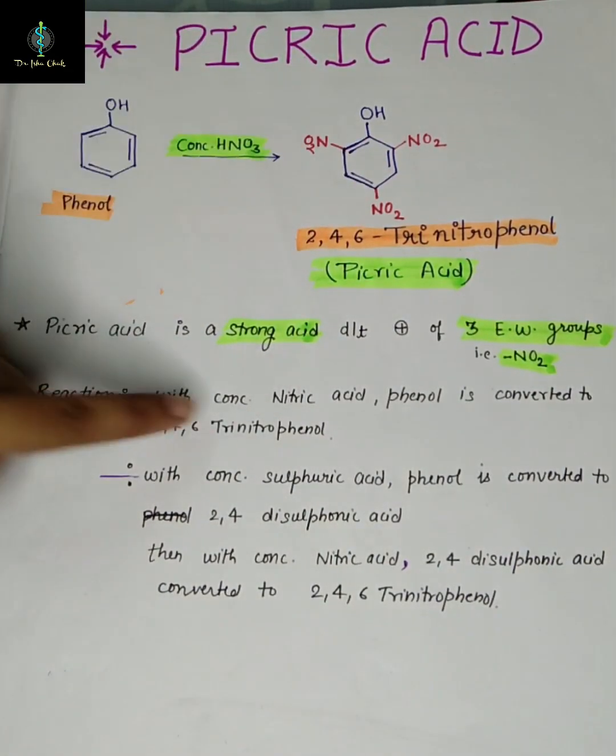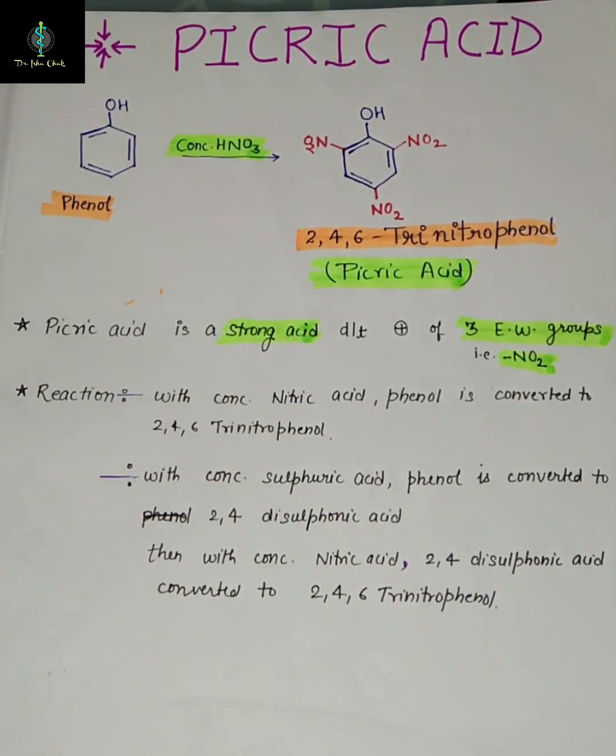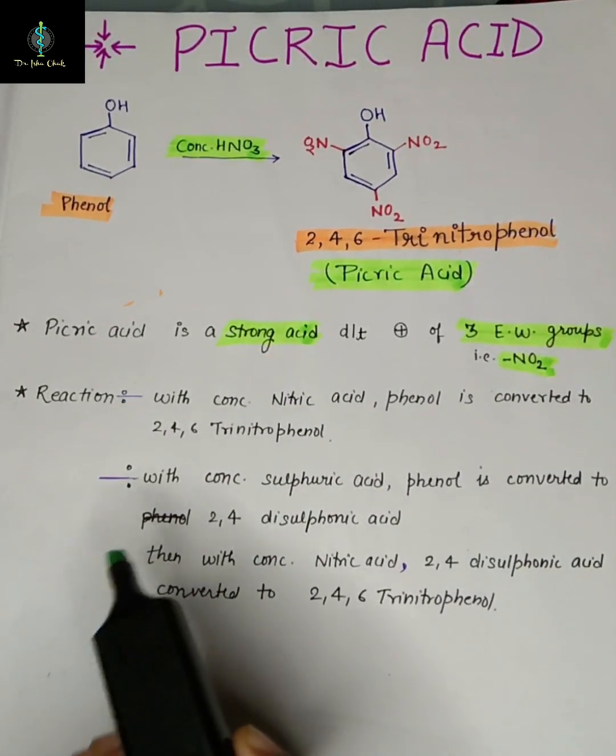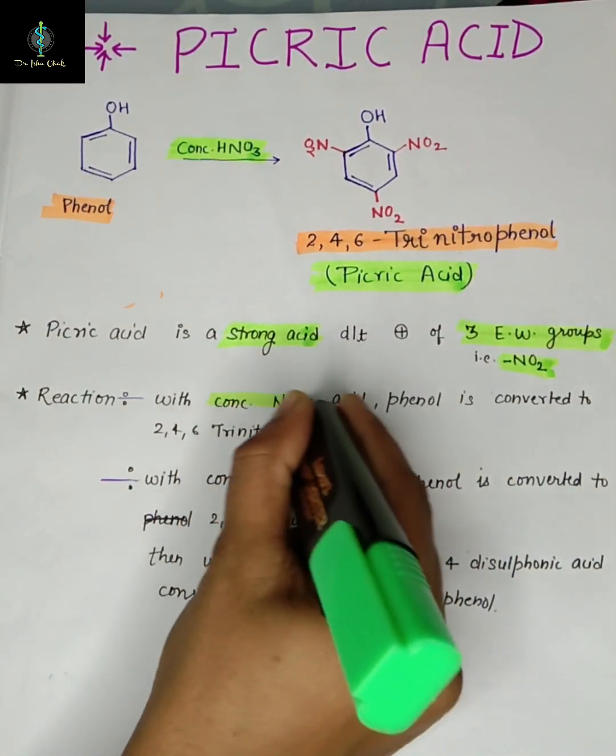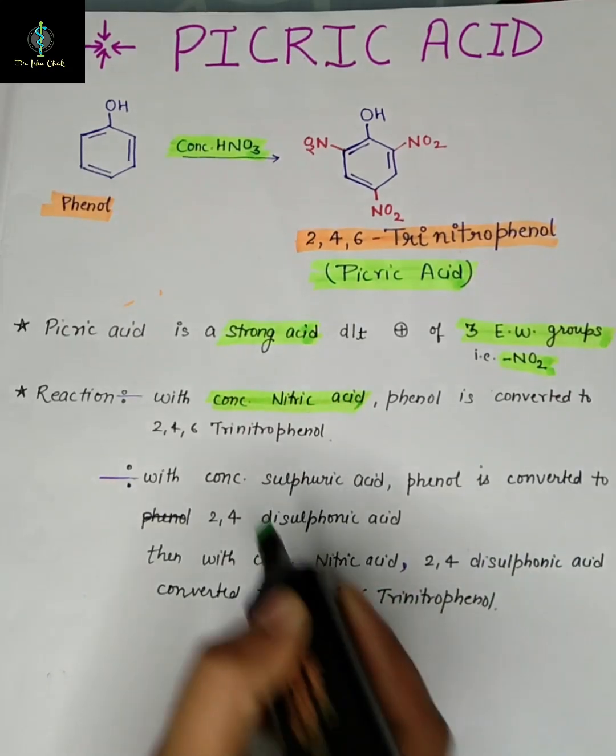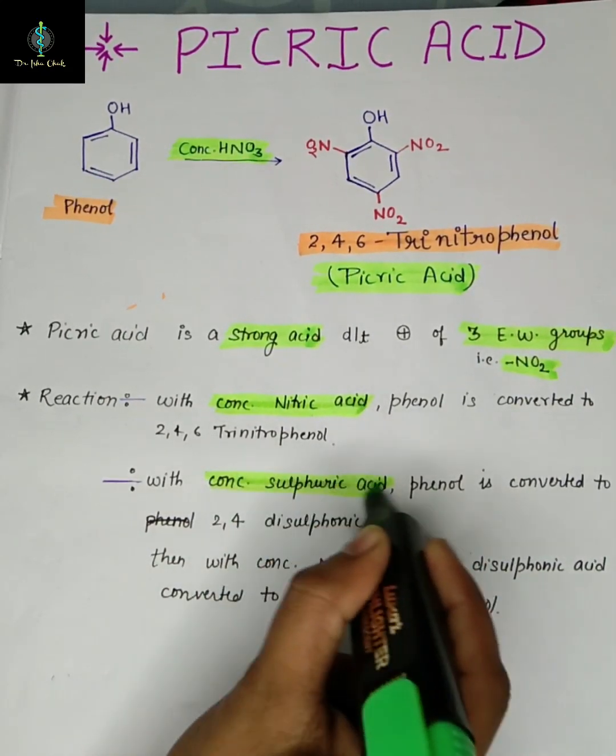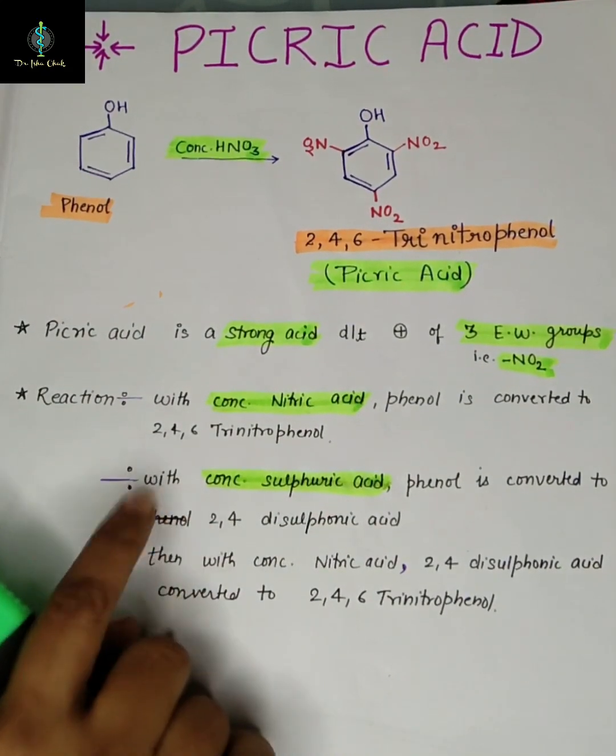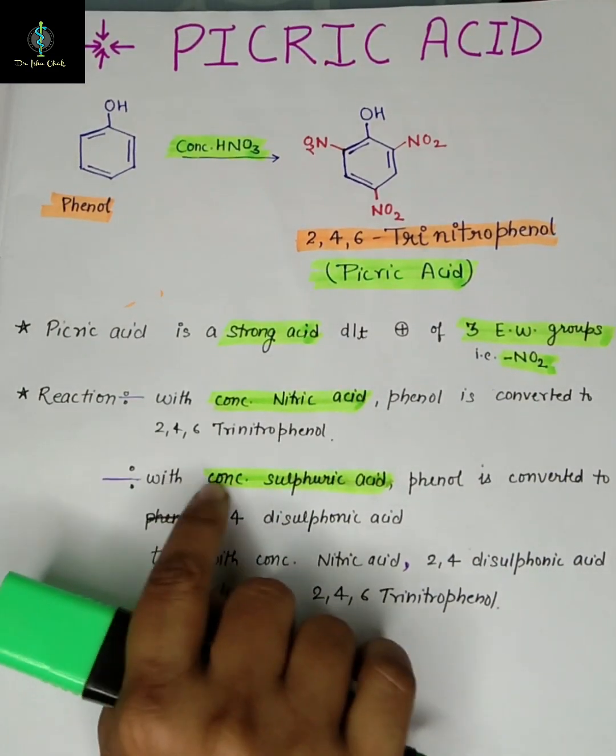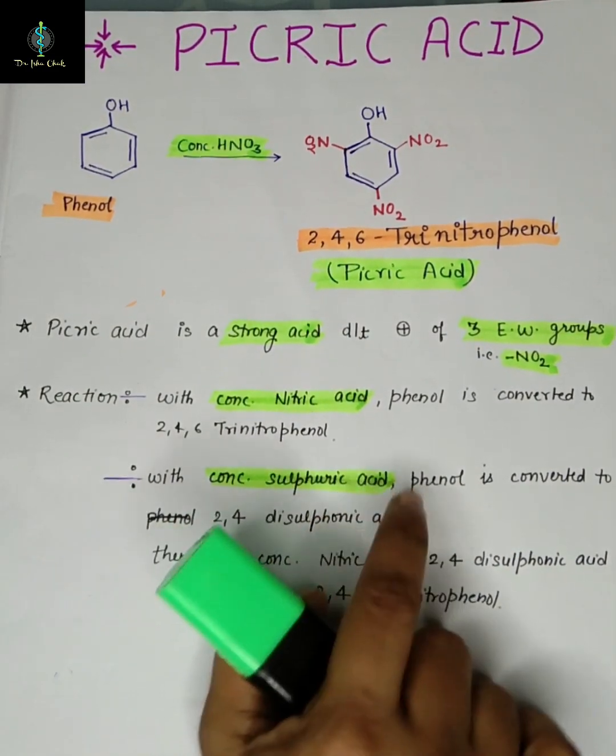There are two reactions: one is with concentrated nitric acid and the other is concentrated sulfuric acid. Nowadays this reaction is used. With concentrated sulfuric acid, phenol is converted to the 2,4-disulfonic acid.